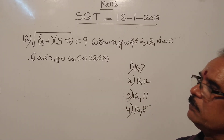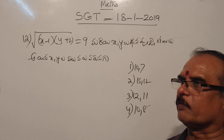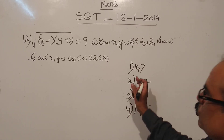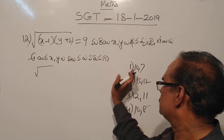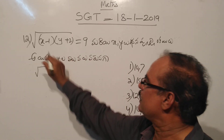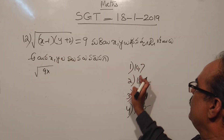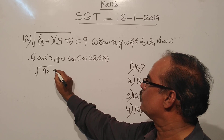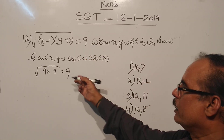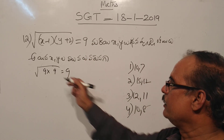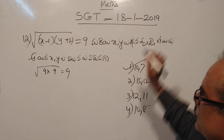For this type of question, we look at the options and choose. Taking x as 10 minus 1 equals 9, and y as 7 plus 2 equals 9. That gives us 9 into 9, and root of 9 into 9 equals 9. That is the answer.